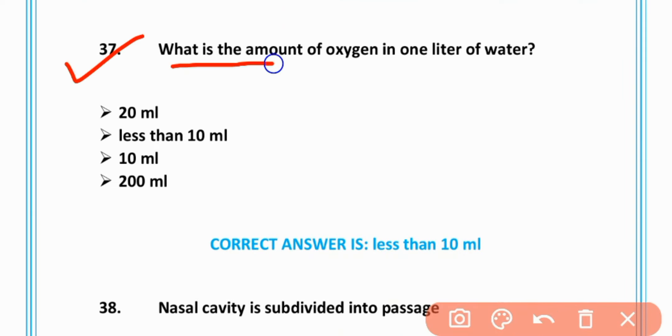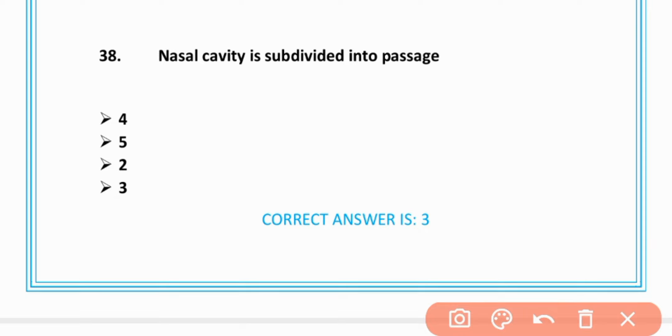MCQ number 37: What is amount of oxygen in one liter of water? Less than 10 ml, option B is correct. MCQ number 38: Nasal cavity is subdivided into 3 passages, option D is correct.